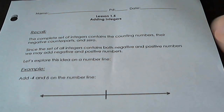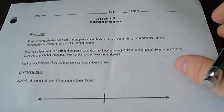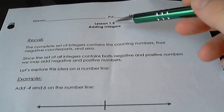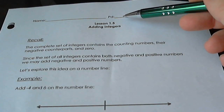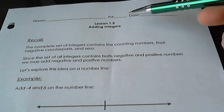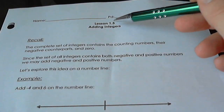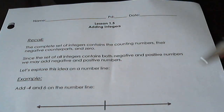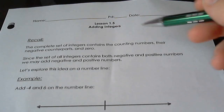We're here for Lesson 1.5, Adding Integers. In order to complete this, you'll need your two-page — actually three pages — front, back, and front of Lesson 1.5, Adding Integers.